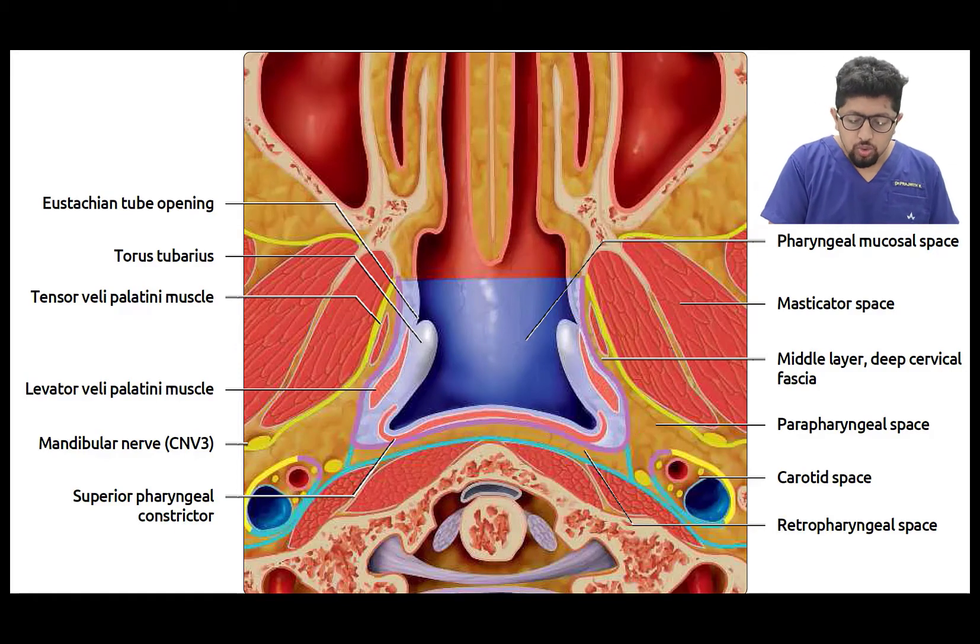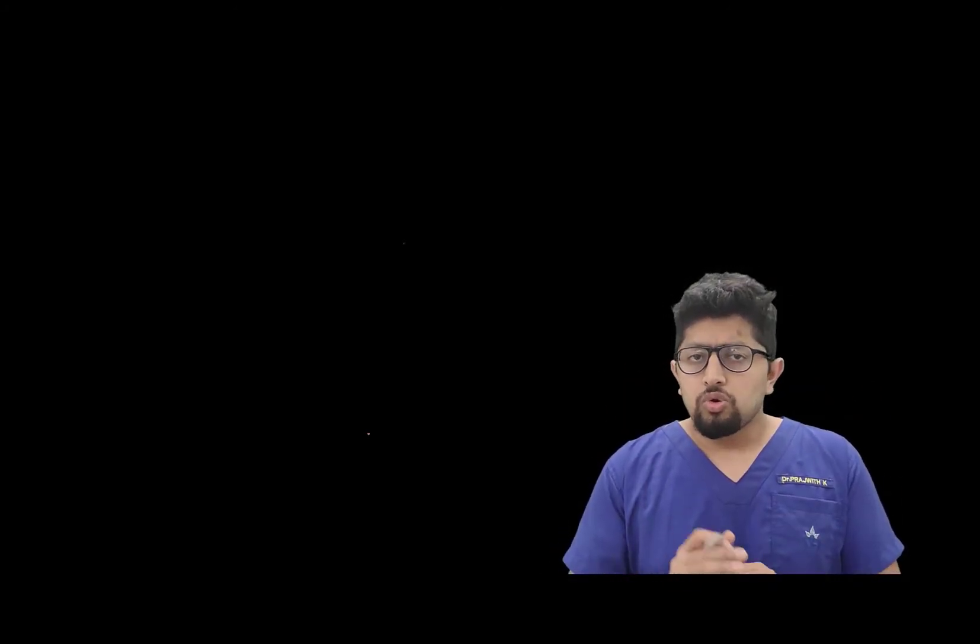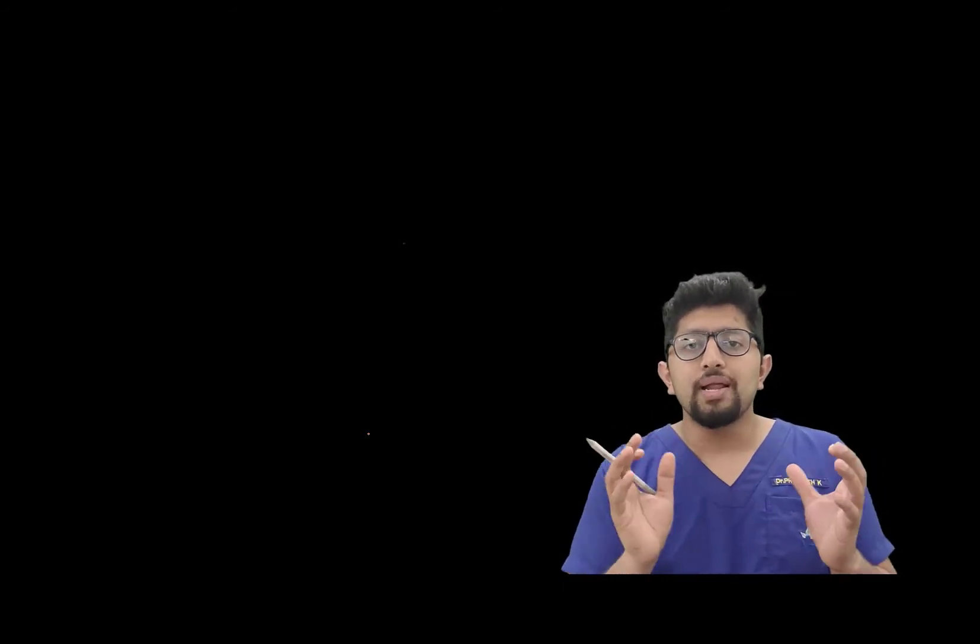The pharyngeal mucosal space is present anterior to the retropharyngeal space, making it the medial-most neck space. It is not completely covered by fascia — unlike most neck spaces, this space is covered by fascia only on its outer aspect, while the inner aspect is lined only by the mucosal layer. It is considered a space to account for any lesion arising in this region.